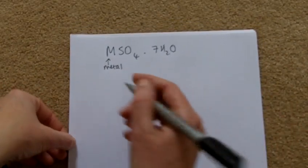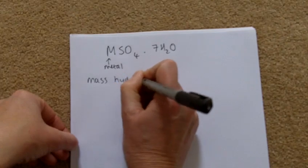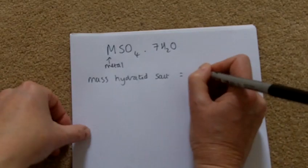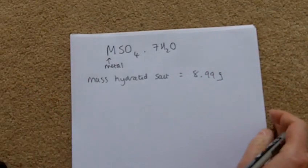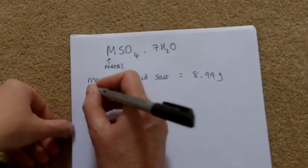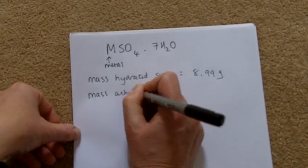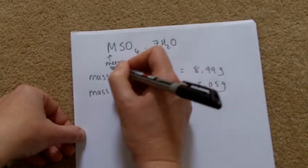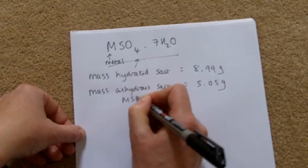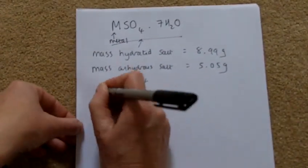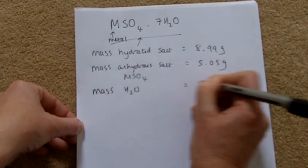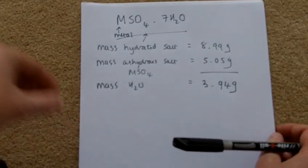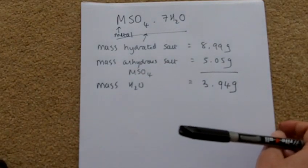The experiment is exactly the same: take your hydrated salt, put it in a crucible, and heat it up — don't decompose it, just drive off the water. You let it cool, weigh the crucible and solid, and you're left with the anhydrous salt with all the water driven off. That mass is 5.05 grams — remember two decimal places. The hydrated salt is all of it, and the anhydrous salt is just the metal sulfate. Subtract to get the mass of water.